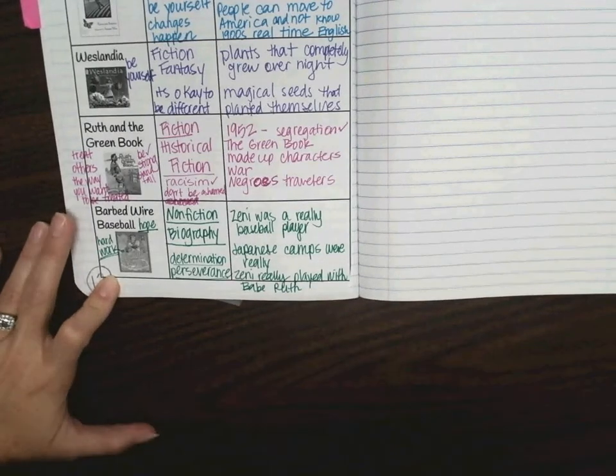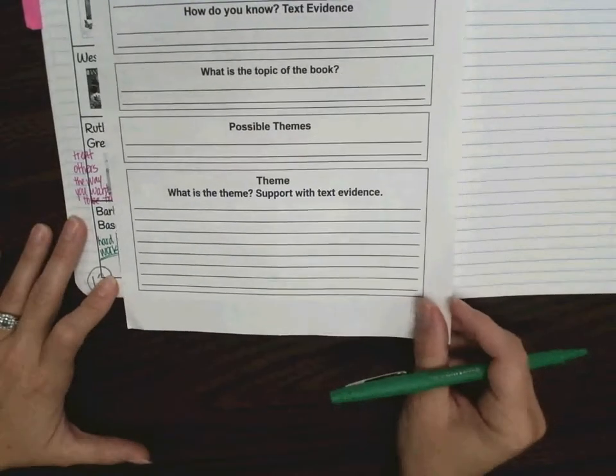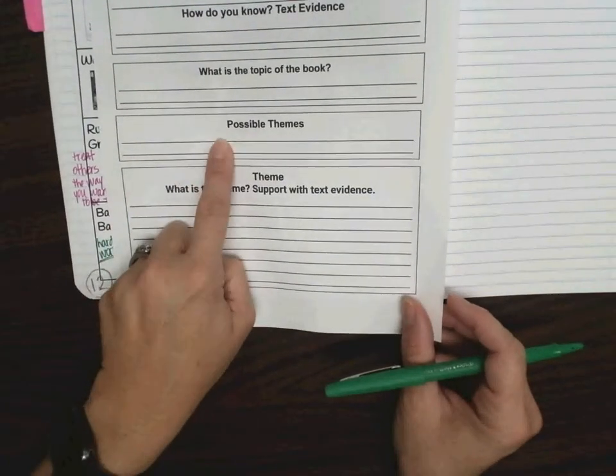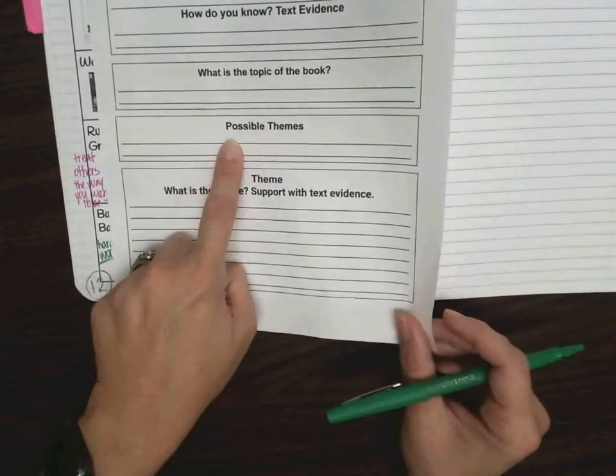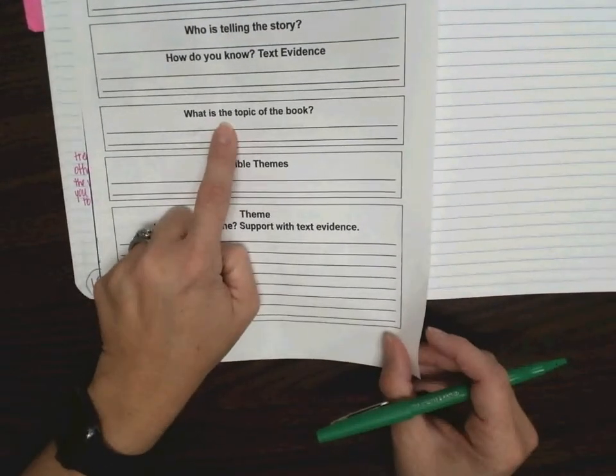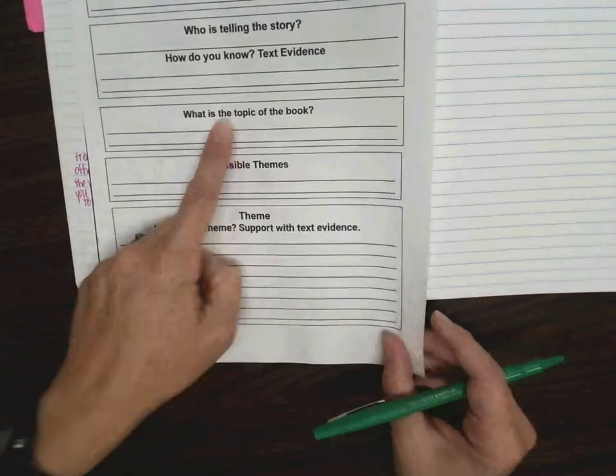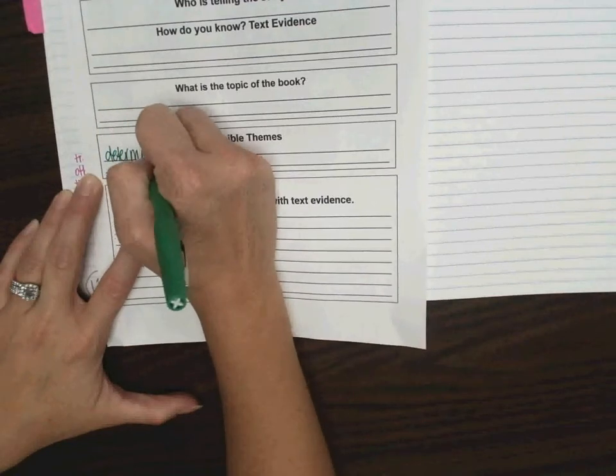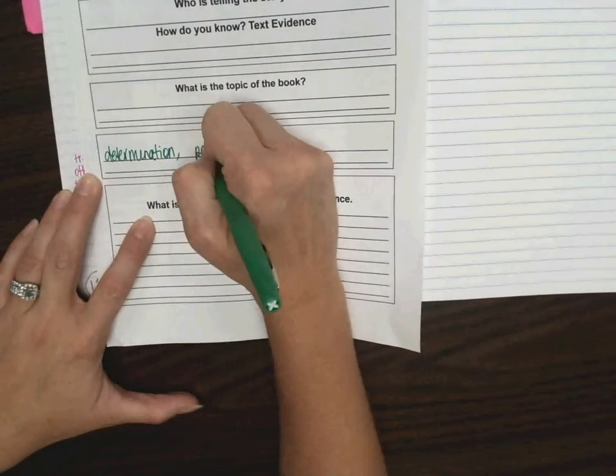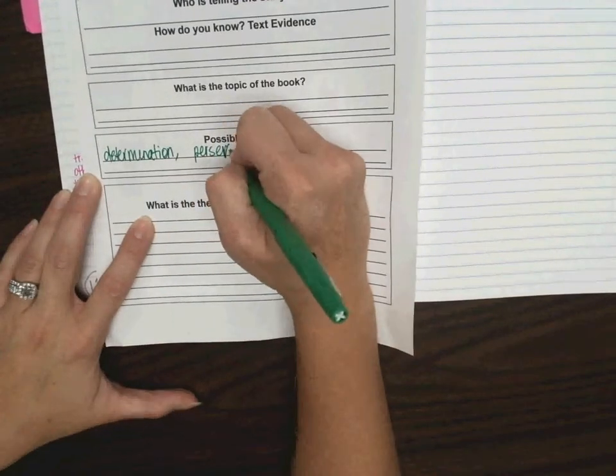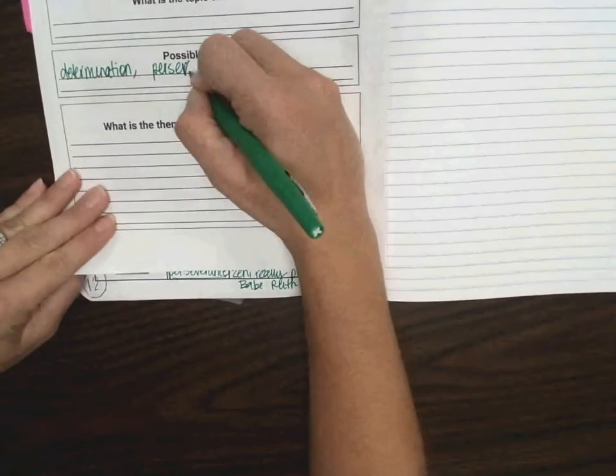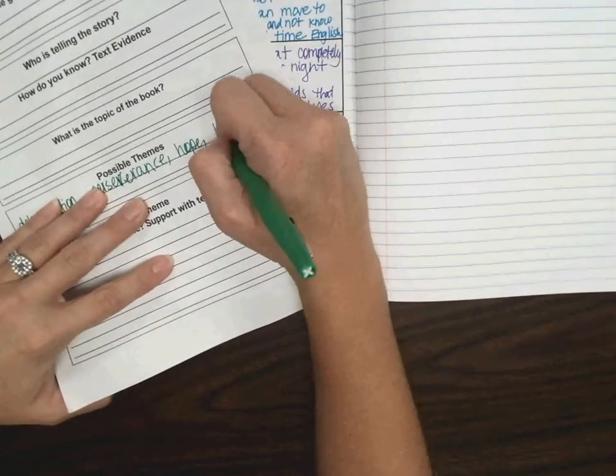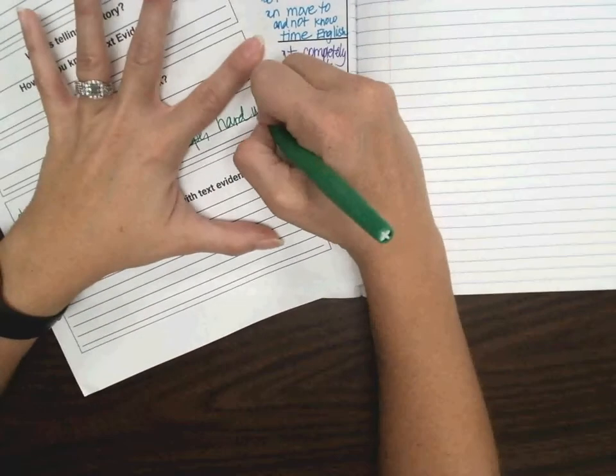And that's that page that looks like this. So, I could write possible themes right here. Determination, hope, perseverance. I don't want to write on this because I haven't made a copy just yet. What is the topic of the book? Remember, that is the, you know what, I'm just going to go ahead and write on this. So, I'm going to write determination. I'm going to write perseverance. I never know how to spell it. Hope. Hard work.